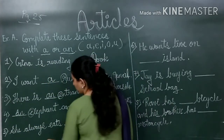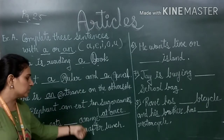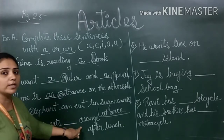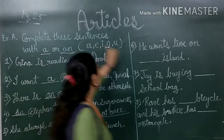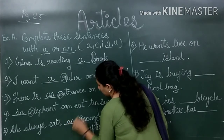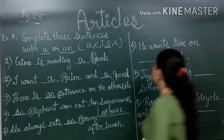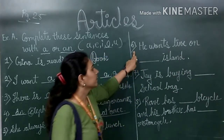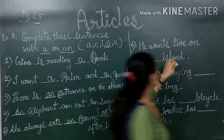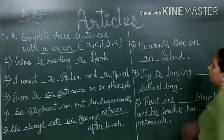Number five is: She always eats blank orange after lunch. 'Orange' also starts with the vowel O, so we write 'an orange'. Number six is: He wants to live on blank island. 'Island' starts with I, which is also a vowel, so we use 'an'. The answer is: an island.